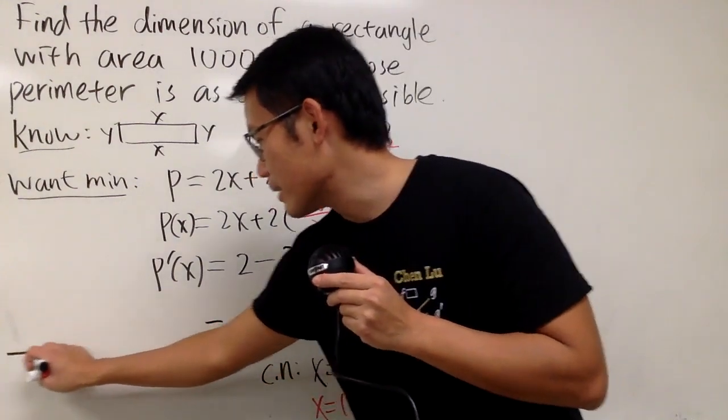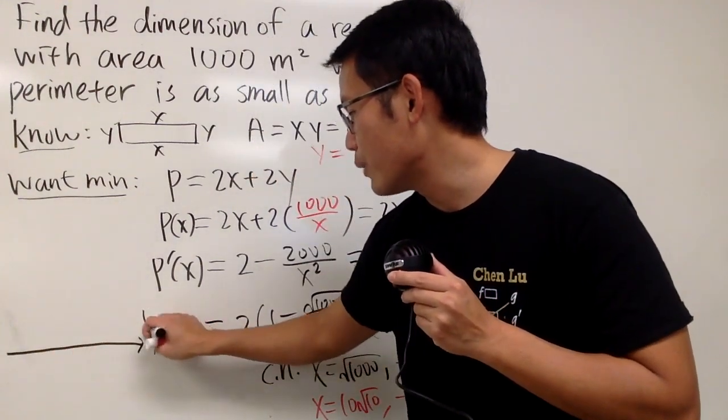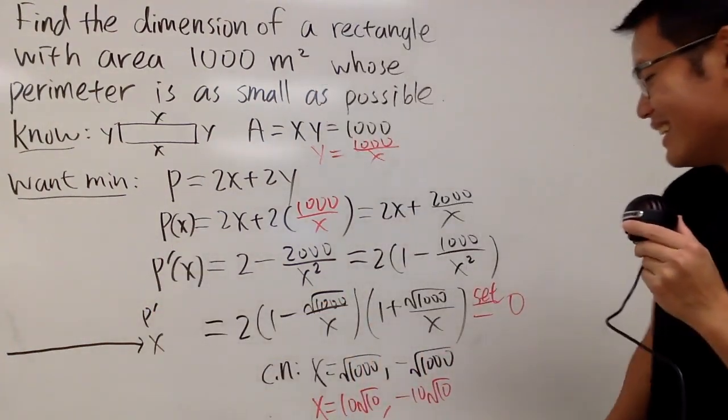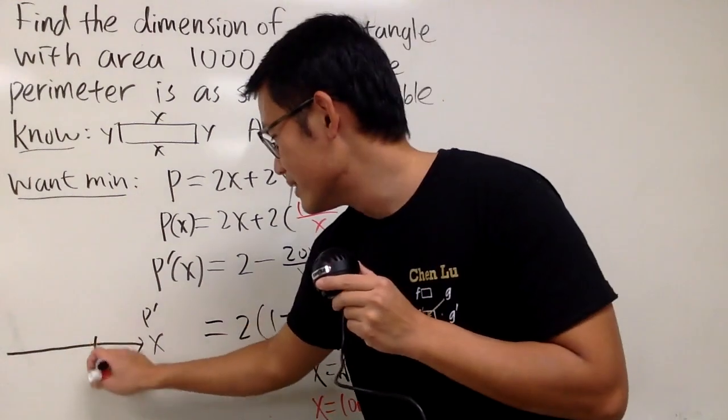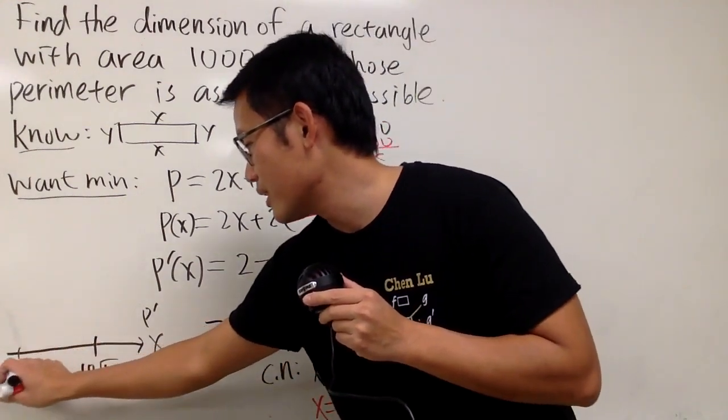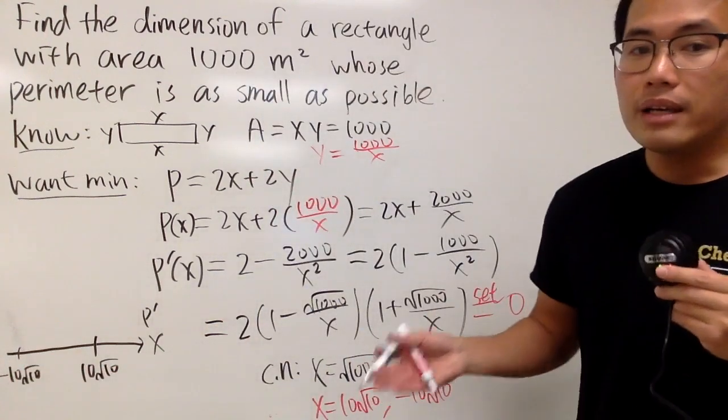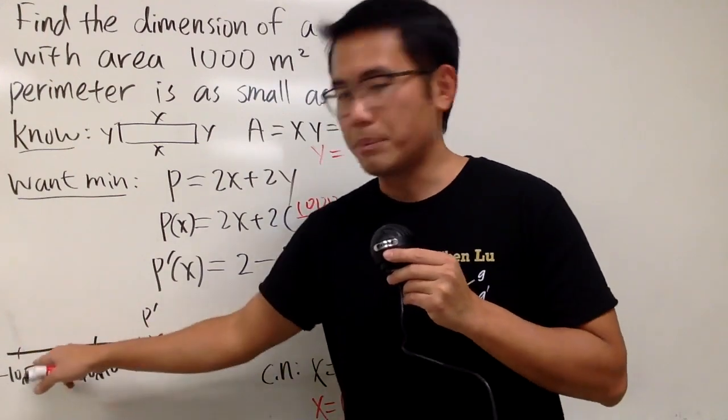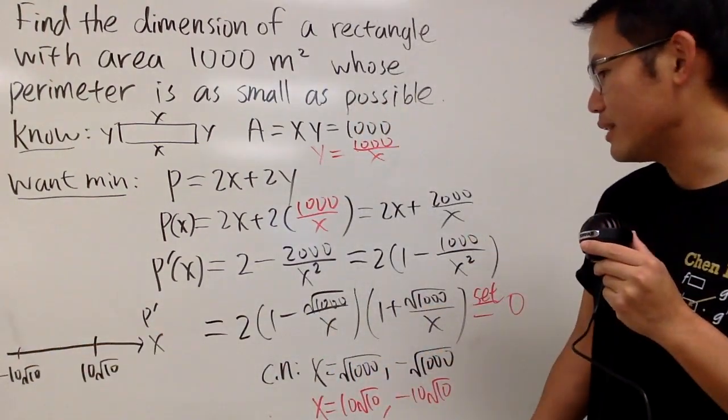All right. So, now let me just draw the number line. This is the x value, and we'll do the first derivative sign chart, sign number line whatsoever. Okay. So, this is 10 square root of 10. And we also should put on negative 10 square root of 10. Anyway, pick a number less than 10 square root of 10, but bigger than that. Let's say 1.